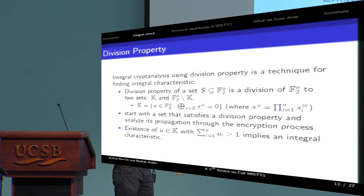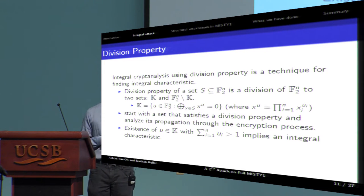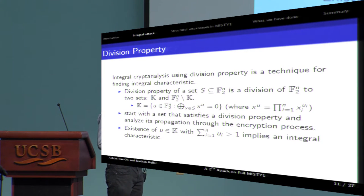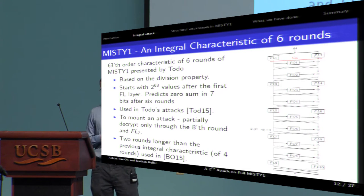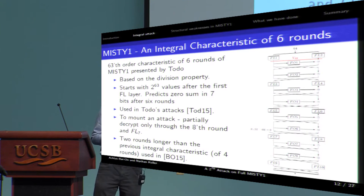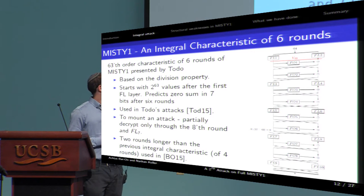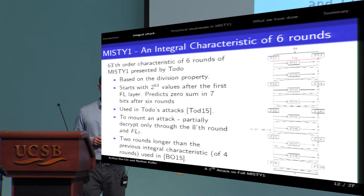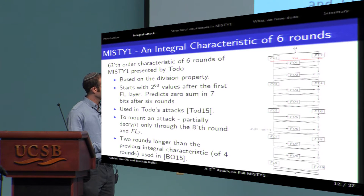If after i rounds, the set of good u's contains at least one u which coordinates sum to two or more, then you get an integral characteristic of i rounds. Todo applied his technique to MISTY-1, and found a six-round integral characteristic, starting after the first FL layer. This characteristic, integral characteristic, is two rounds longer than the previous best-known characteristic.